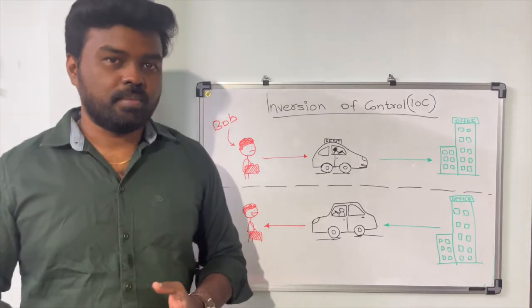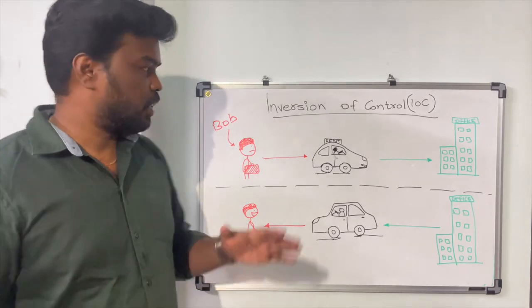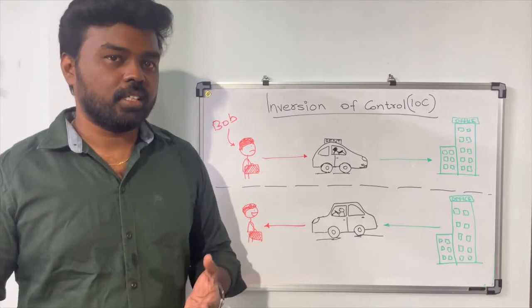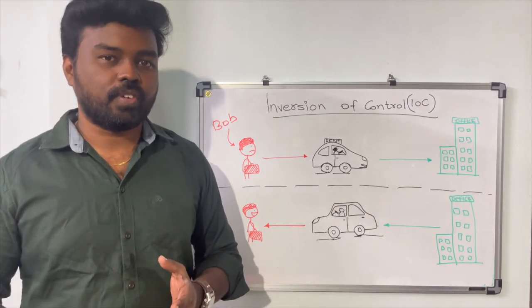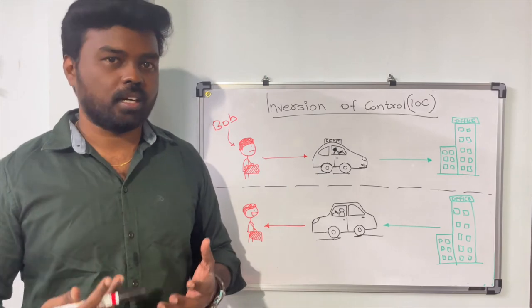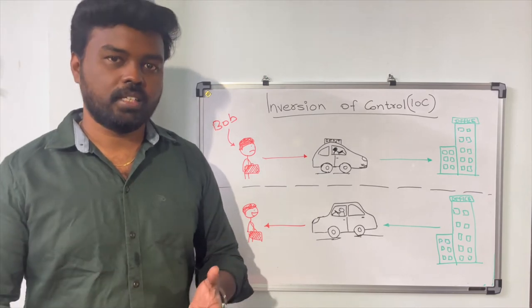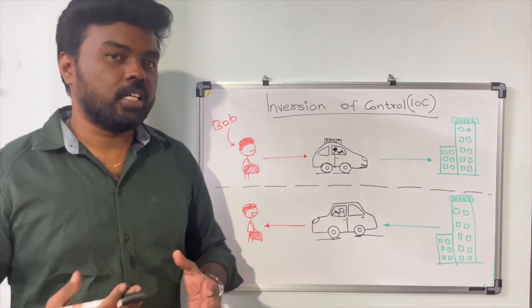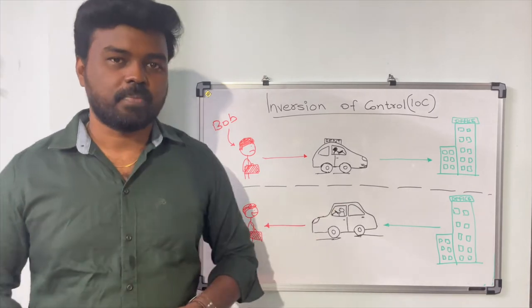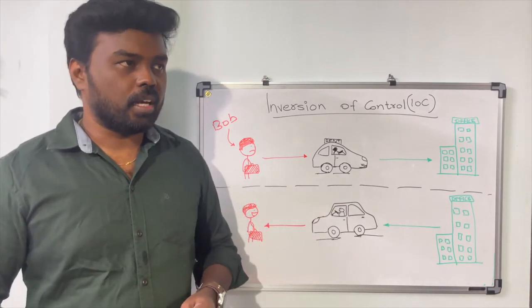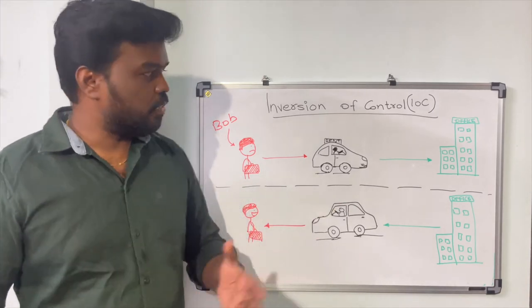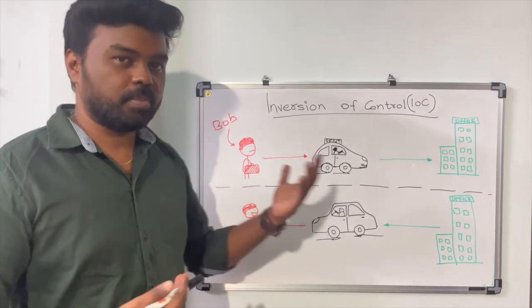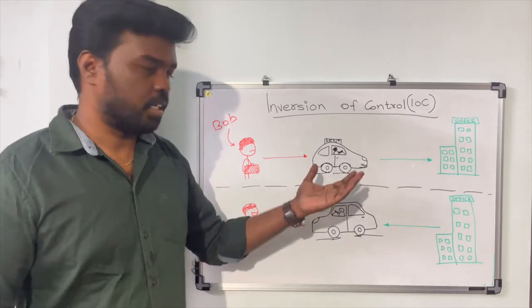At some point Bob gets tired because every morning he finds it difficult to find a rental car. Sometimes the car arrives very late, and Bob is not able to manage the expense of paying the rent to the driver. Also, sometimes a new driver comes each time, so Bob has to explain the directions every time.